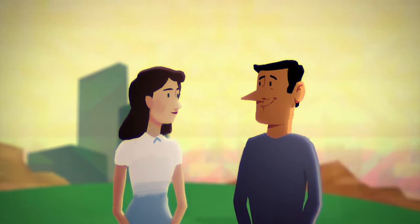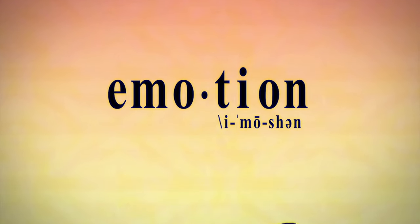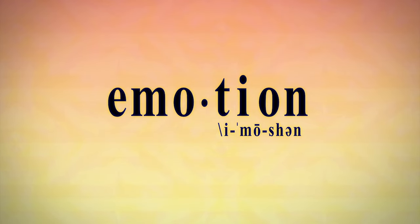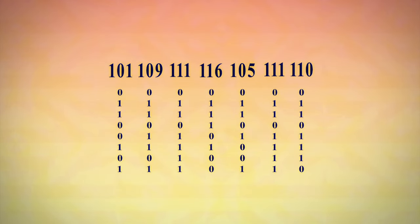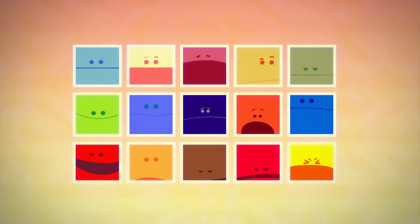But before we get there, how can something so complex as emotion be converted into mere numbers, the only language machines understand? Essentially the same way our own brains interpret emotions, by learning how to spot them.